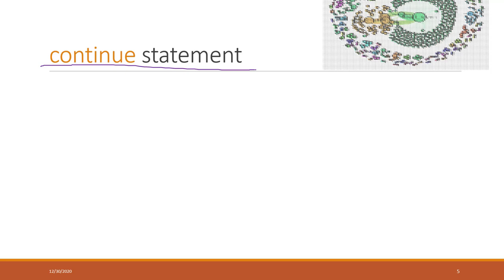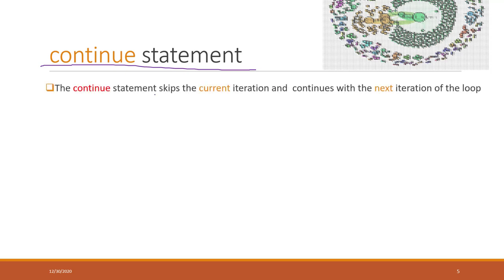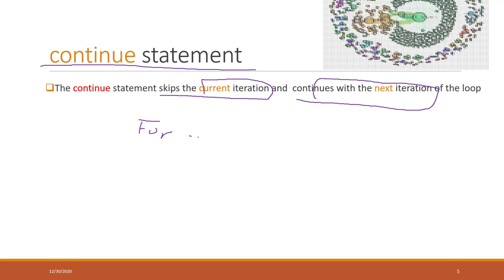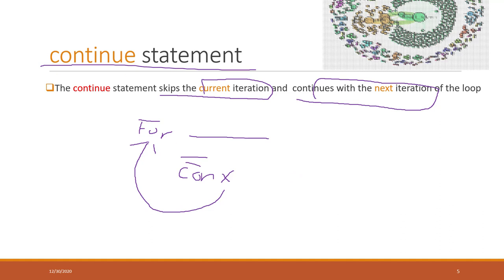The next statement to control flow is continue. Continue is different from break: continue will skip the current iteration, but it will continue with the next iteration. So it is still within a for loop — when you reach continue, it stops the current iteration but goes back to the next iteration. Similarly, continue only works on the smallest enclosing loop, either a while loop or a for loop.